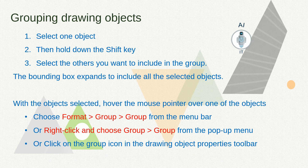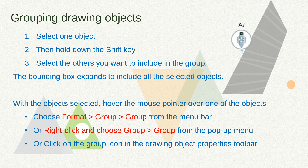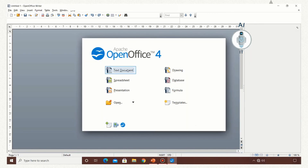With the objects selected, move the mouse over one of the objects and do any one of the following: click on Format > Group > Group, or right-click and choose Group > Group from the pop-up menu, or click on the group icon in the drawing object properties toolbar. Let us have a demonstration.